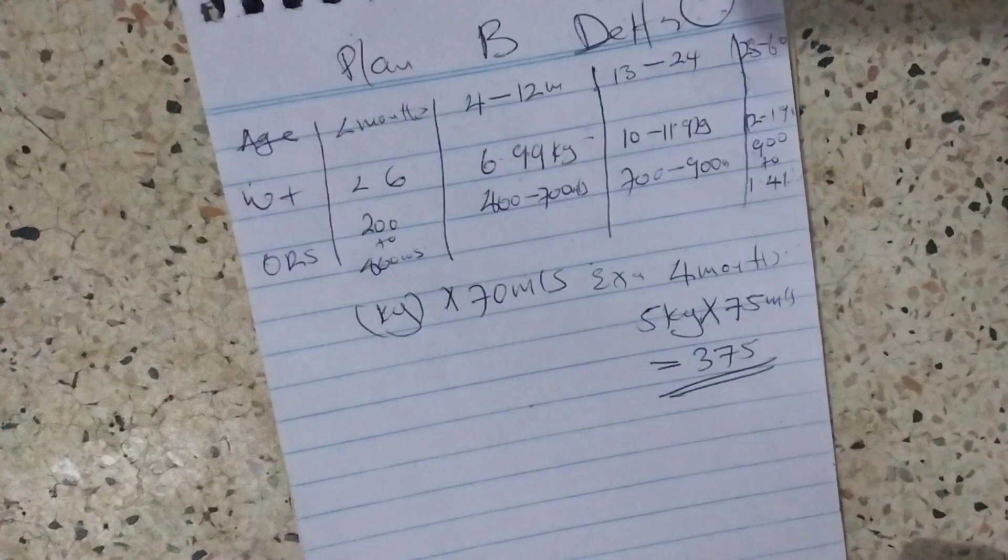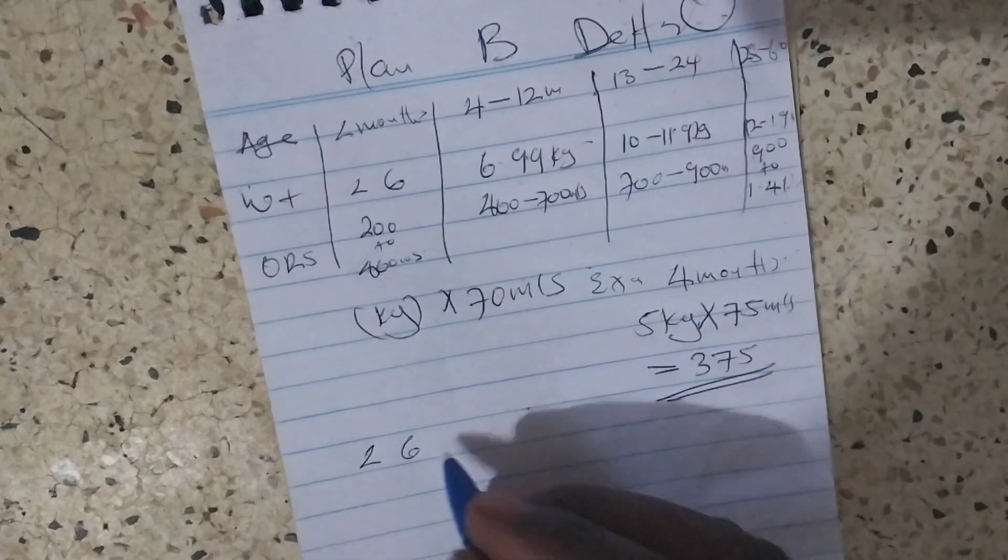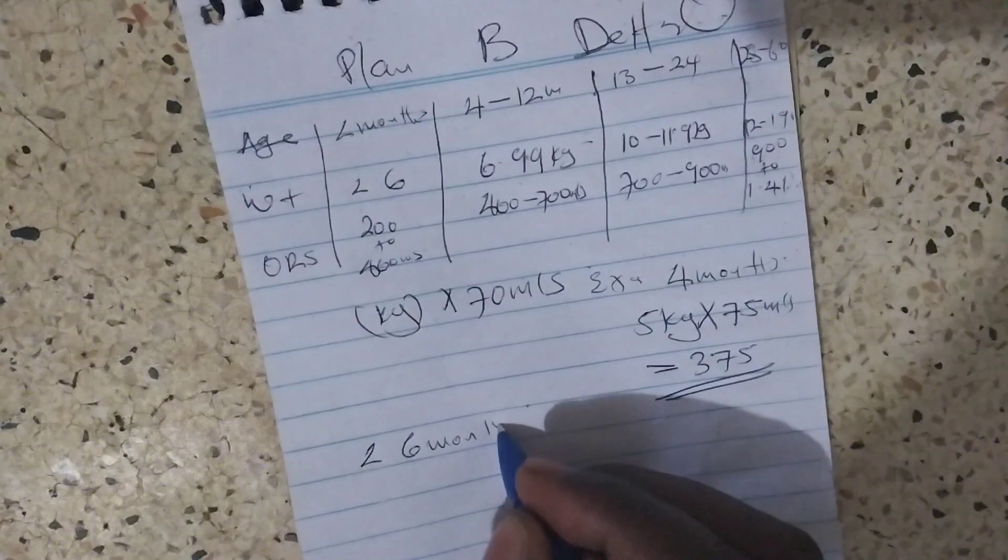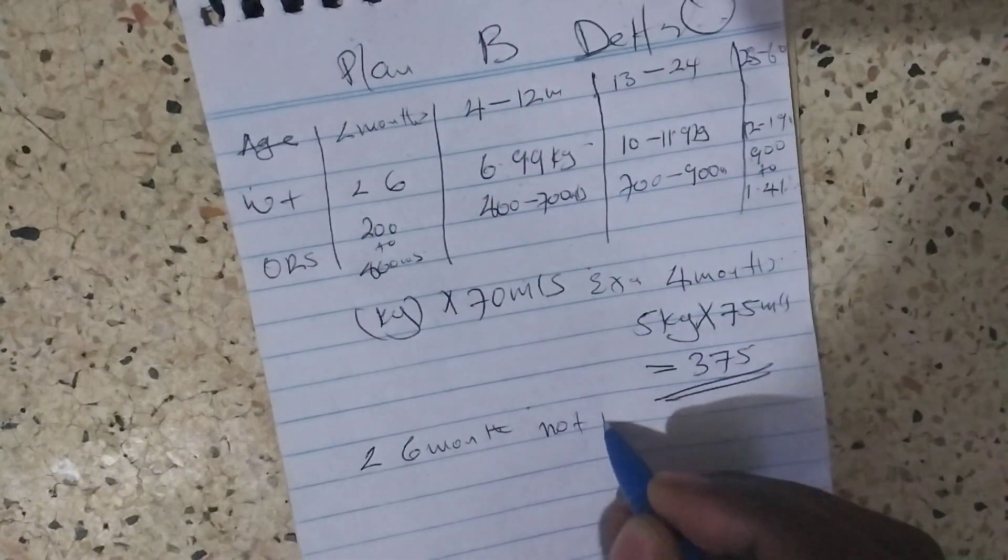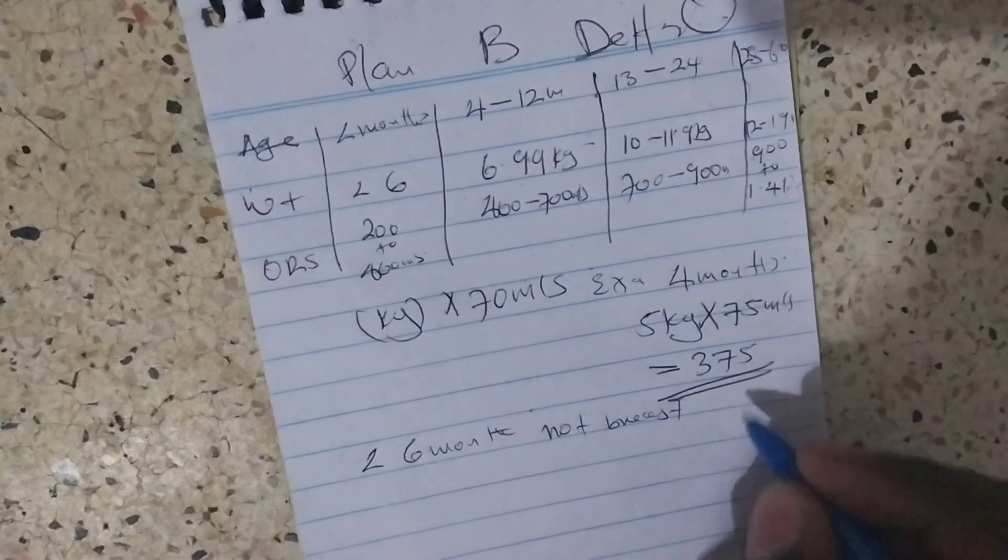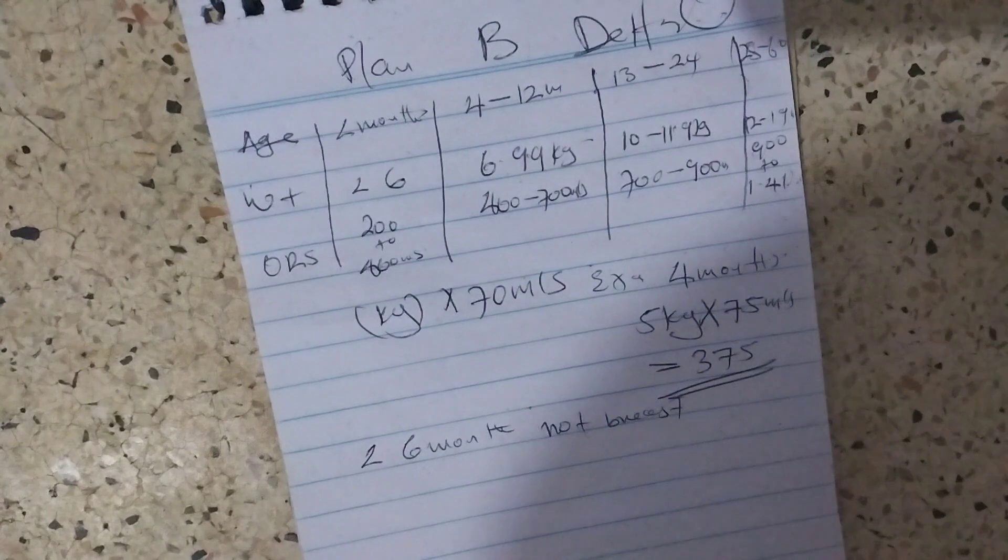If the baby is less than six months and the baby is not breastfeeding, you give clean drinking water to the baby in the first four hours.